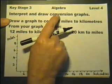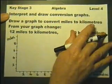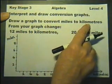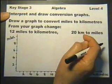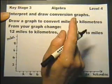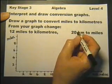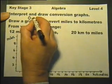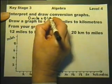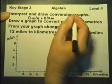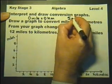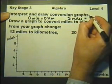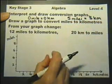Algebra Level 4: interpret and draw conversion graphs. For example, draw a graph to convert miles to kilometres — or kilometres to miles once you've got the graph. To do that you need a couple of coordinates for the graph to pass through. A simple thought: 0 miles will be 0 kilometres, and something you should learn is that 5 miles is exactly 8 kilometres.